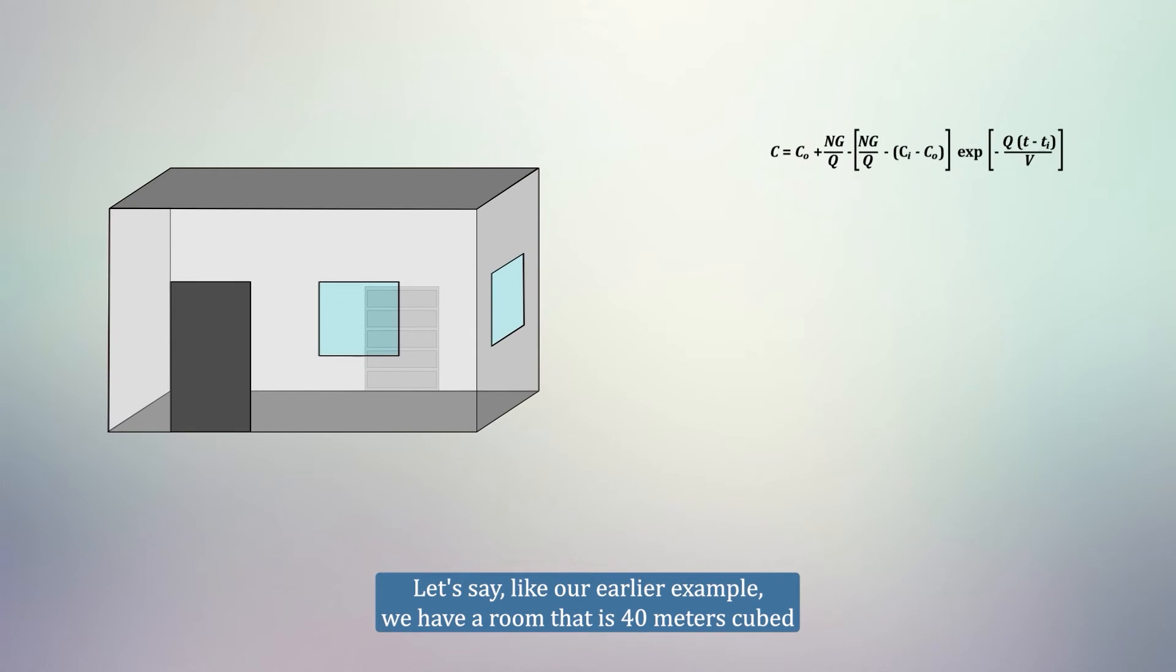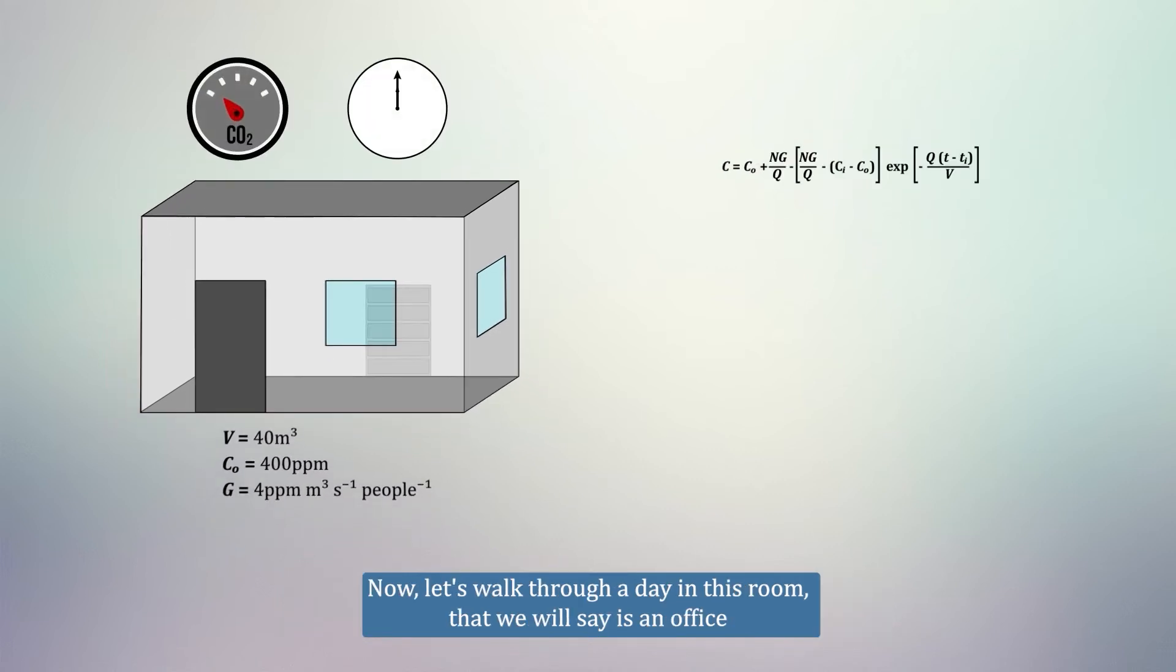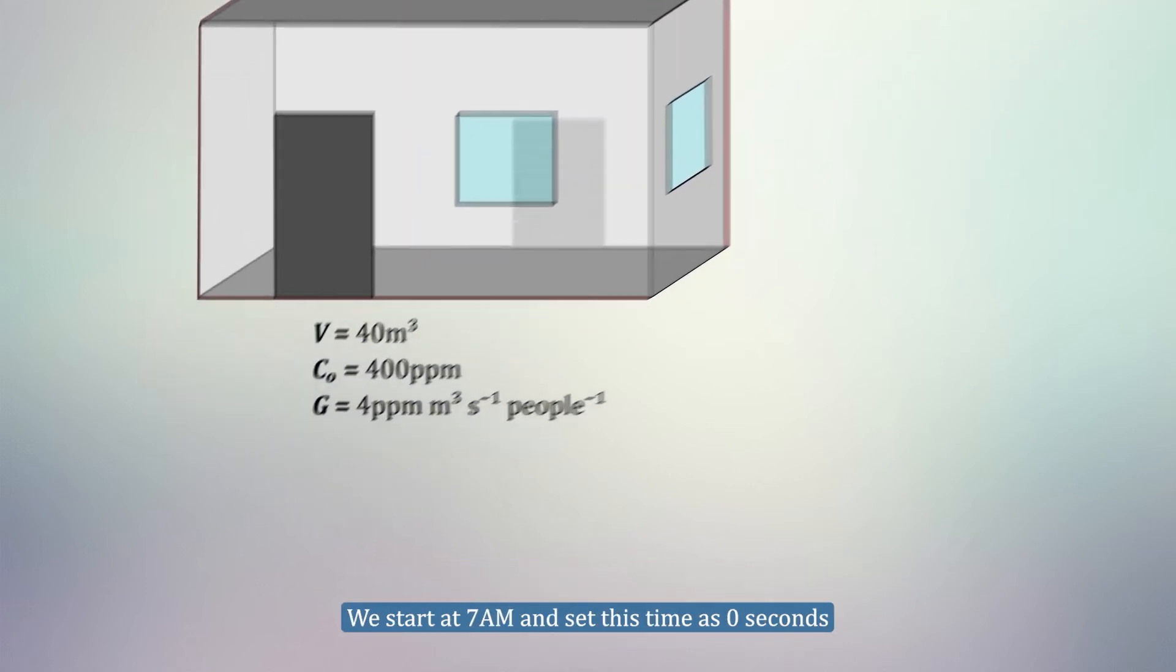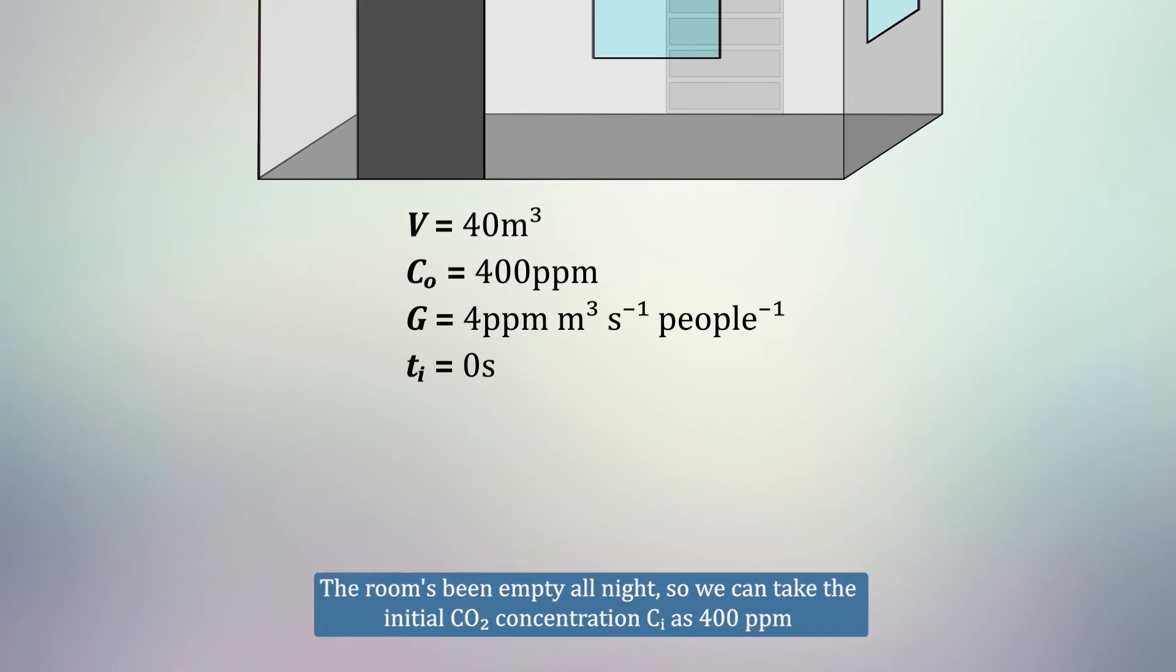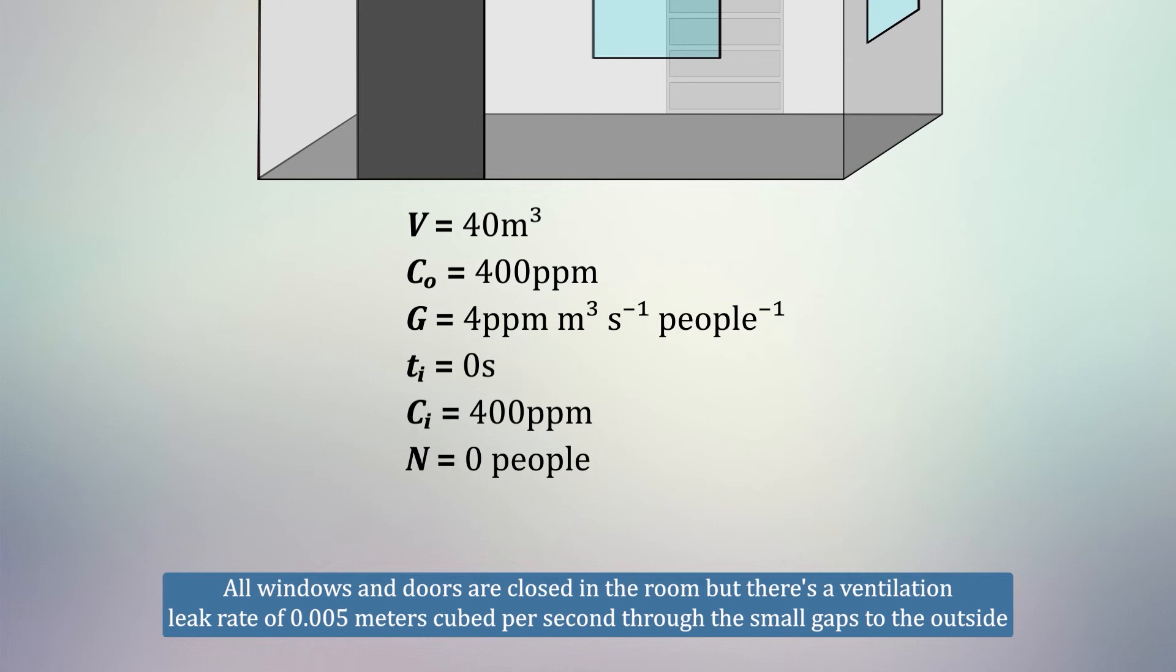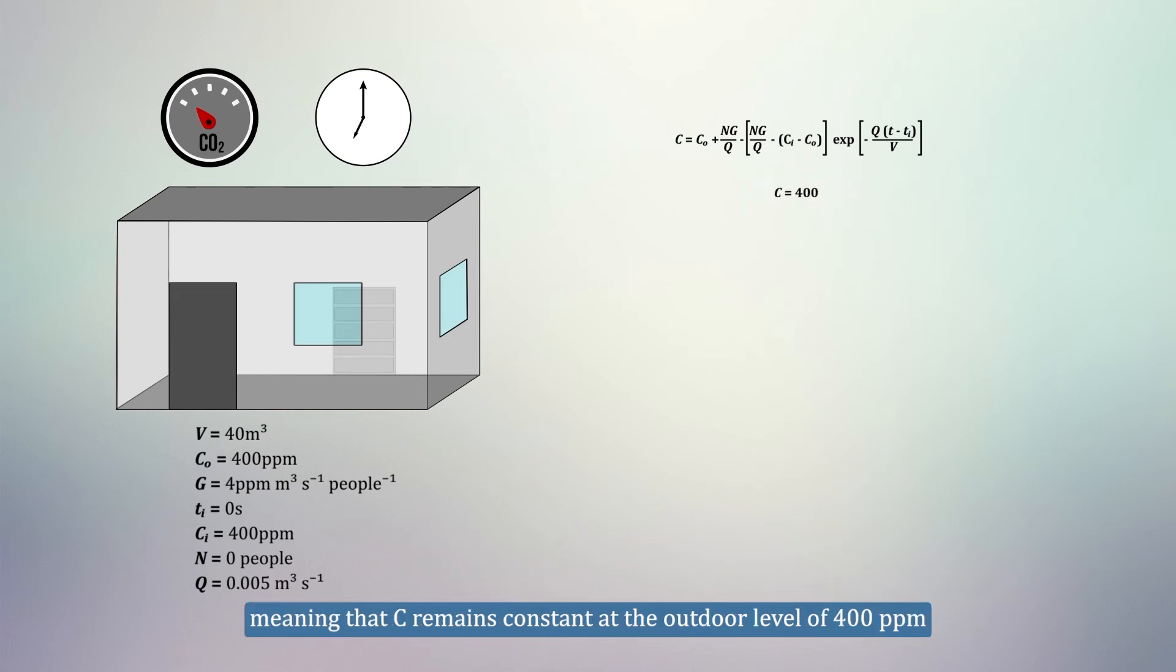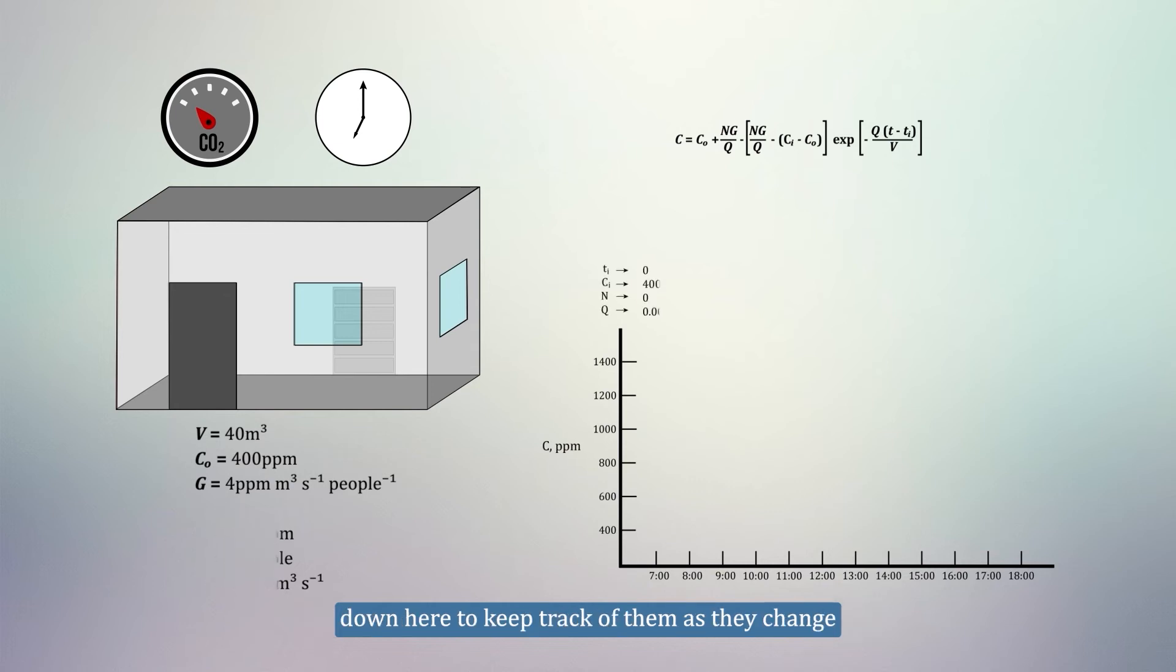Let's say, like our earlier example, we have a room that is 40 meters cubed. The outdoor concentration is 400 ppm, and the CO2 generation rate is 4 ppm meters cubed per second per person. Now let's walk through a day in this room that we will say is an office. We start at 7am and set this time as 0 seconds, so Ti equals 0. The room has been empty all night, so we take the initial CO2 concentration, Ci, as 400 ppm. Work doesn't start till 9am, so the occupancy is currently 0. All windows and doors are closed in the room, but there is a ventilation leak rate of 0.005 meters cubed per second through the small gaps to the outside. We substitute these numbers into our equation and find that everything cancelled, meaning that C remains constant at the outdoor level of 400 ppm. And this is what we expect. With nobody in the room to produce CO2, the level will remain unchanged.